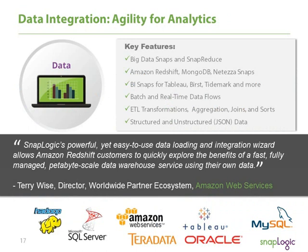A key strength for SnapLogic is the ability to do both application and data integration in a single platform. We have SnapReduce for big data integration, pre-built connectors to Amazon Redshift, MongoDB, Netezza, and other high-performance database management systems, as well as BI SNAPs — we work quite well with Tableau. Partners like Burst and Tidemark are also bundling SnapLogic into their offerings. One reason we can do this so well is that we natively speak JSON — all of our pipelines run JSON, which is a core strength of our modern architecture.